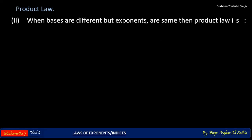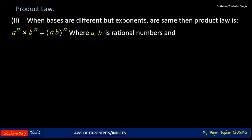The other product law says that when bases are different but exponents are the same. Suppose 'a' is a base with exponent 'n', multiplied with another base 'b' with the same exponent 'n'. Then we just multiply their bases and the exponent remains common, where a and b are rational numbers and n is a natural number.